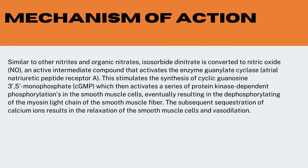Mechanism of action: Similar to other nitrites and organic nitrates, Isosorbide Dinitrate is converted to nitric oxide, an active intermediate compound that activates the enzyme guanylate cyclase and atrial natriuretic peptide receptor A. This stimulates the synthesis of cyclic guanosine 3,5-monophosphate (cGMP), which activates a series of protein kinase-dependent phosphorylations in smooth muscle cells, eventually resulting in dephosphorylation of the myosin light chain of the smooth muscle fiber. The subsequent sequestration of calcium ions results in relaxation of smooth muscle cells and vasodilation.